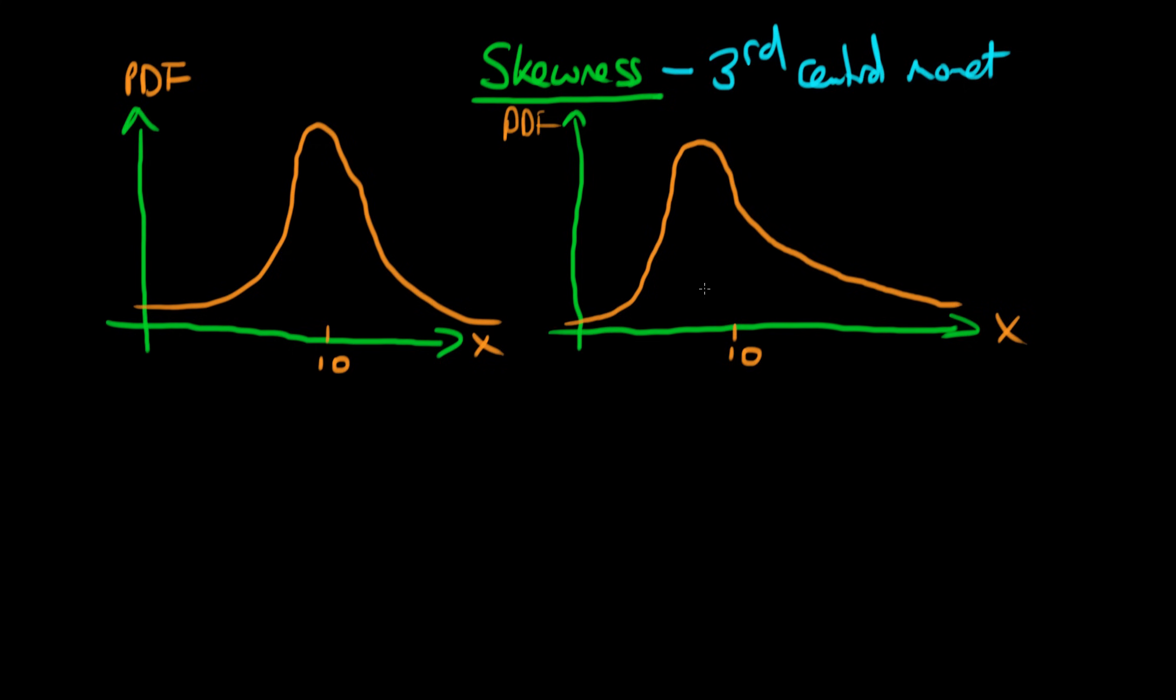So how do we capture that in just one number? What number could we use to represent this skewness? I should mention that this second variable is something we refer to as positively skewed.